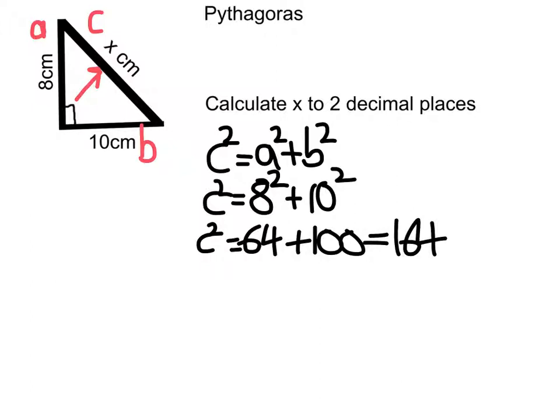Now, for this one here, we now need to think about what c is. We've got c squared, so we're going to have to square root 164.